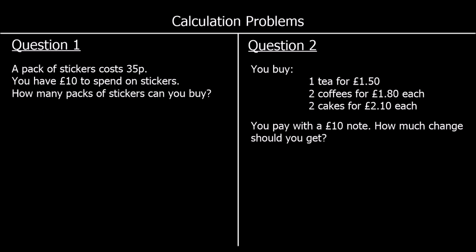Question one: a pack of stickers costs 35p. You have £10 to spend on stickers. How many packs can you buy? This question is asking how many 35p's go into £10, so that's 1,000p divided by 35. We could do long division with 35 into 1,000, or we could simplify it first.